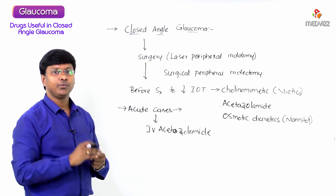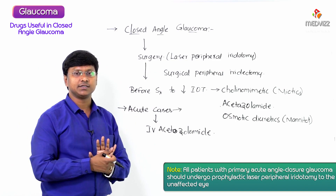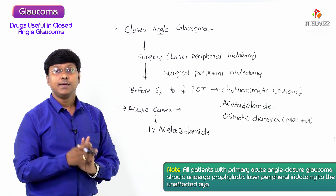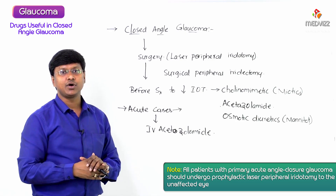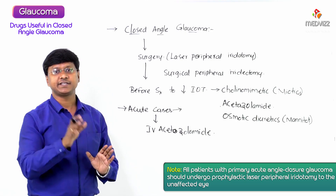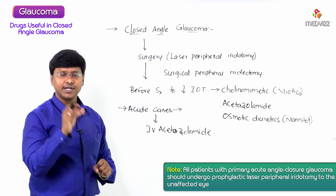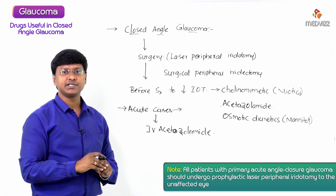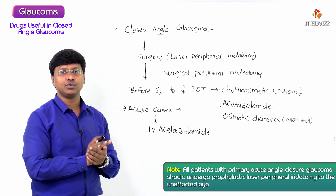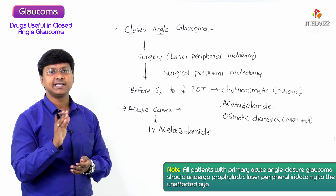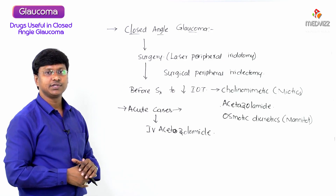An important point to remember: all patients with primary acute angle-closure glaucoma should undergo prophylactic laser peripheral iridotomy to the unaffected eye as well. Treatment must be given not only to the affected eye — even the unaffected eye should undergo prophylactic laser peripheral iridotomy.